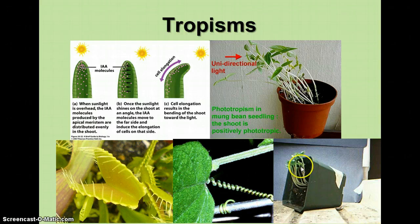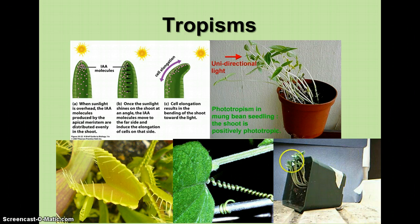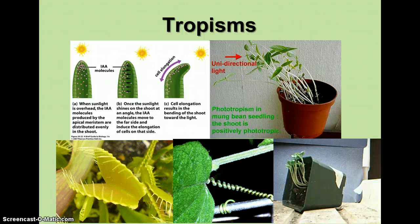Gravitropism is a response to gravity. If you turn a plant pot on its side, the stems will still grow up and the roots will still grow down. Growing upward is called a negative response to gravity, while roots growing down is a positive response. This is what we're observing in our seed germination lab, where seeds are planted in different directions to see the tropisms that occur.